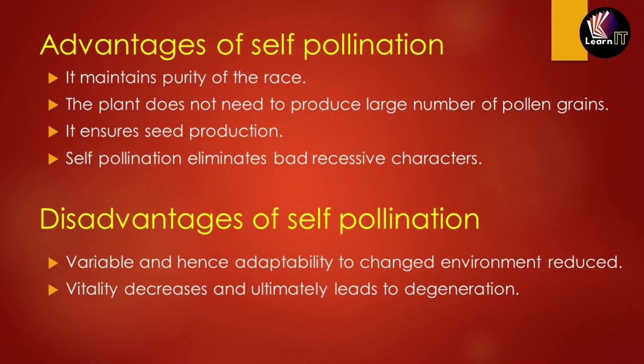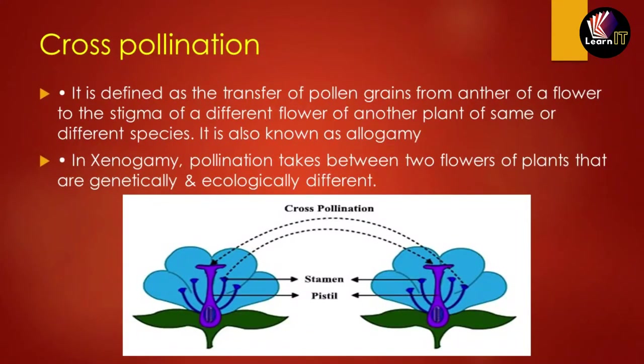The disadvantages of self-pollination are: variability and adaptability to environmental change is reduced because pollination occurs within the same plant. Additionally, the vitality of the plant decreases, ultimately leading to degeneration of the plants.